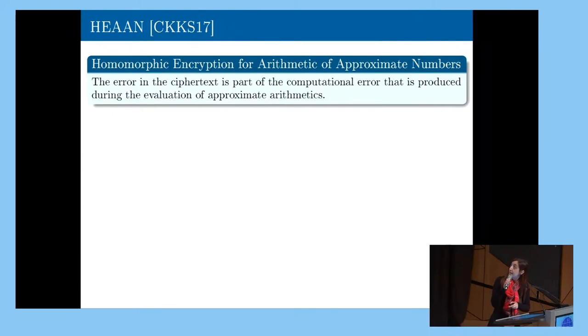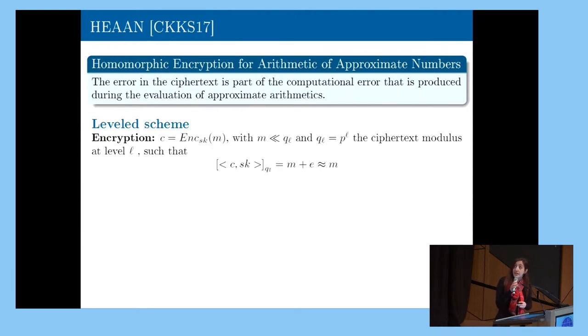So HEAN is a shortcut for homomorphic encryption for arithmetic of approximate numbers. As I said, in the homomorphic ciphertexts, we have some noise, which is contained. In the case of HEAN, the noise is considered as a part of the error that is generated during the homomorphic computations. The scheme is proposed in the beginning as a leveled scheme, so it can support a certain amount of multiplications.